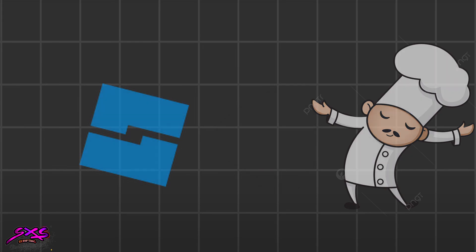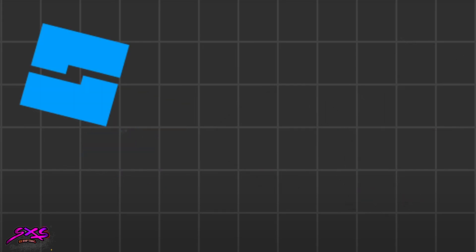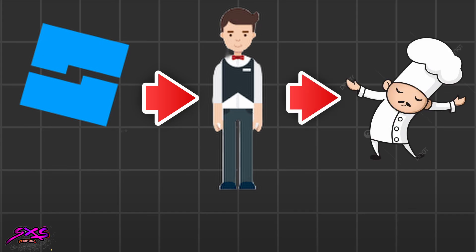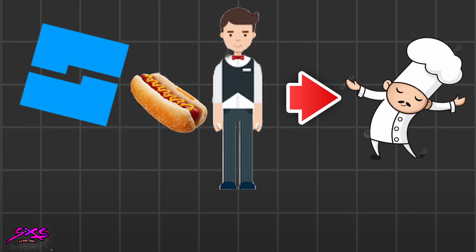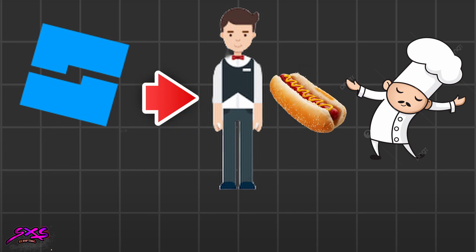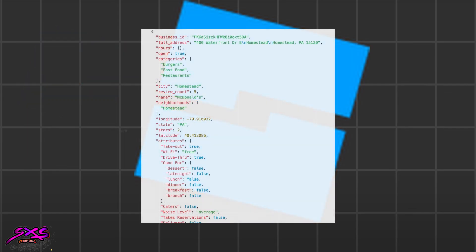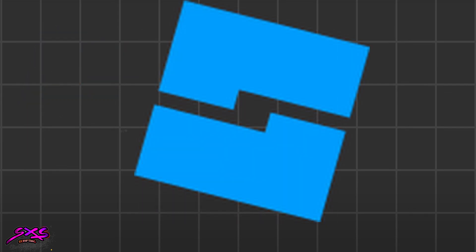Now let's put it all together. The customer, which is Roblox, sends a request through the waiter, which is the HTTP service. The waiter goes to the chef, which is our Express server, and also passes the special ingredient, our API key. If the ingredient is correct, the chef cooks up the data and sends it back through the waiter to the customer. And voila, the customer gets delicious data.